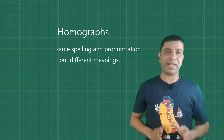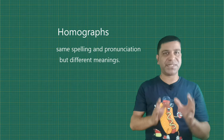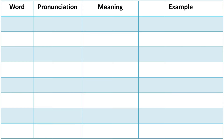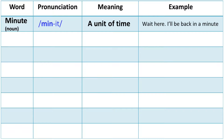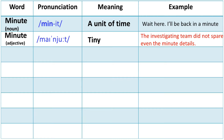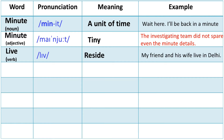Homographs have the same spelling and pronunciation but different meanings. Now look at these examples. M-I-N-U-T-E as a noun is pronounced 'minute,' meaning a unit of time — for example, 'Wait here, I'll be back in a minute.' M-I-N-U-T-E as an adjective is pronounced 'minute,' which means tiny — for example, 'The investigating team did not spare even the minute details.' L-I-V-E as a verb is pronounced 'live' — for example, 'My friend and his wife live in Delhi.'